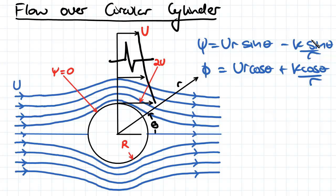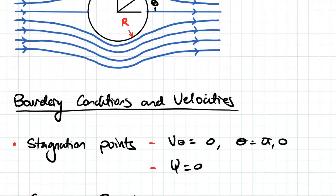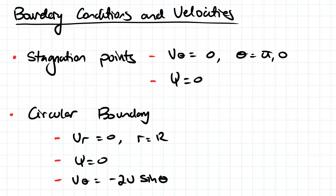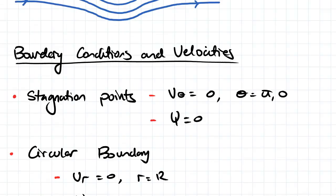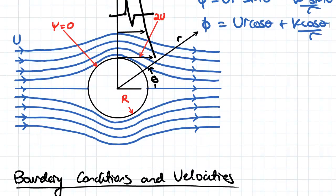So what we now want to have a look at is some of the boundary conditions and velocities at specific points along the flow over the cylinder. So we've got stagnation points. Stagnation points are going to occur here and here. That's where we're going to have velocity equal to zero.